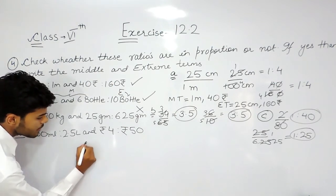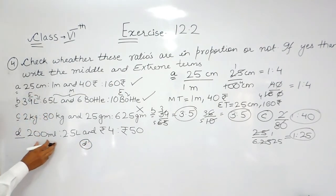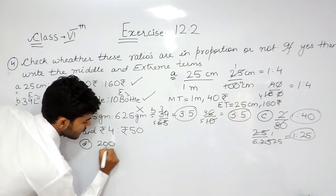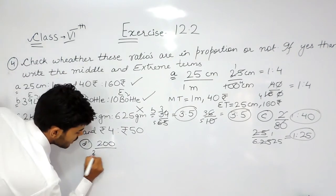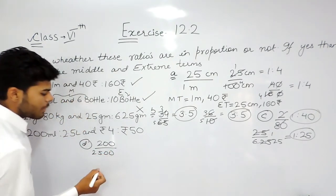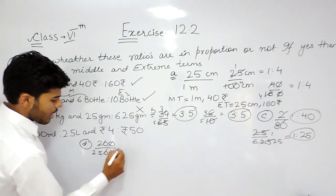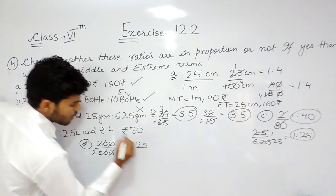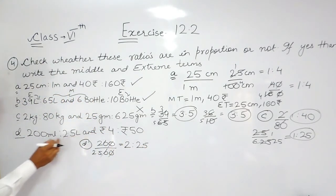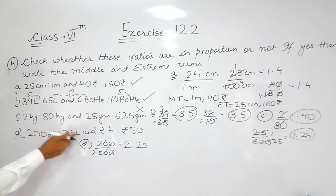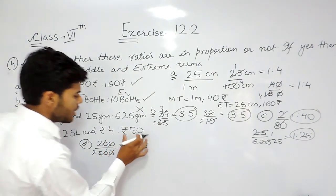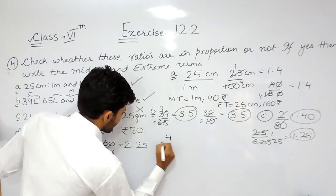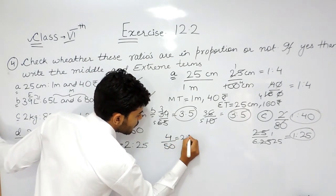In the last part, part D: 200 milliliters ratio 2.5 liters. We will convert 2.5 liters into 2500 milliliters so the units cancel out, giving a ratio of 2 ratio 25. Similarly, for the right hand side the ratio is 4 upon 50, which is again 2 ratio 25.